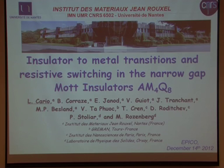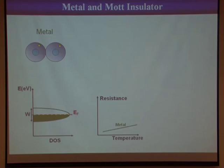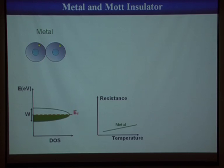Let's start with very basic definitions. A metal is a compound where the electrons are free to move and can hop from site to site. If you look at the electronic structure of a metal, you will always find a band of bandwidth W which is not completely filled, and you see a finite density of states at the Fermi level.